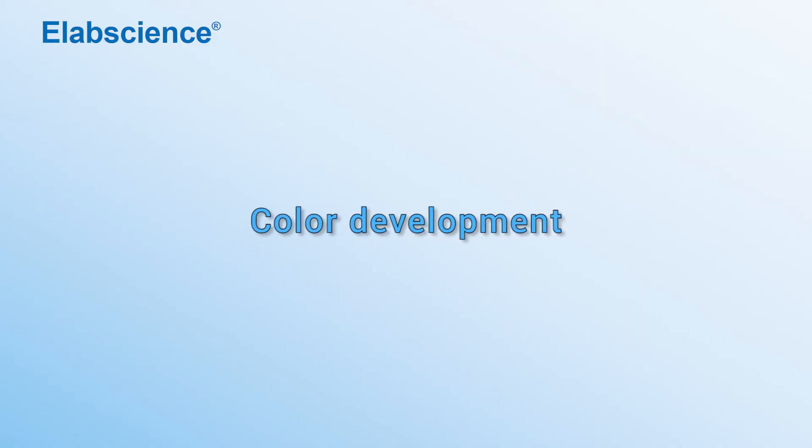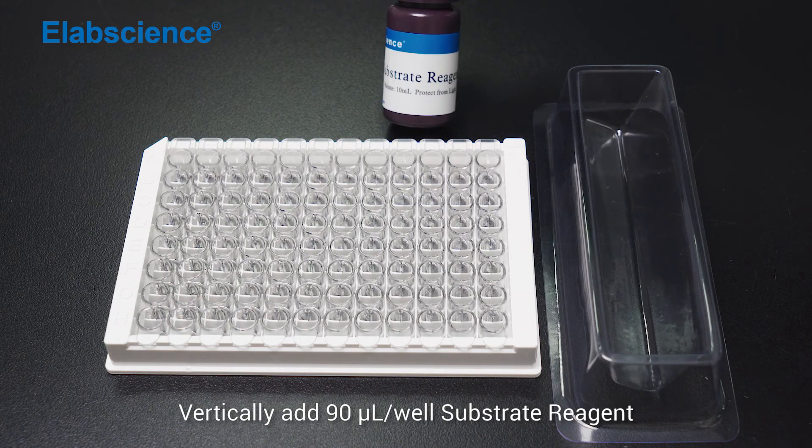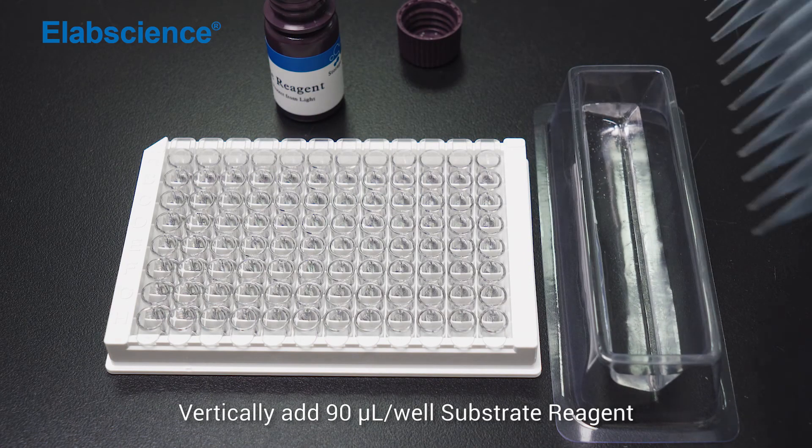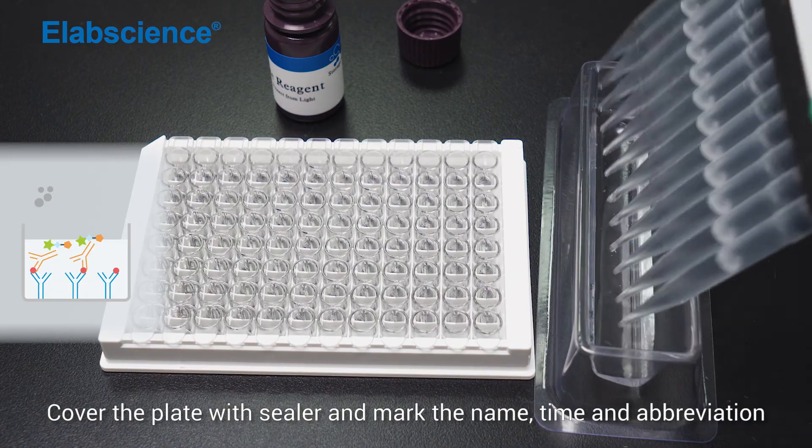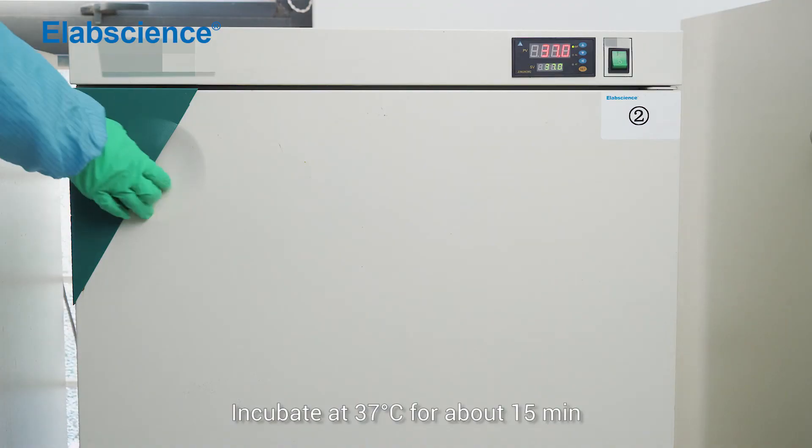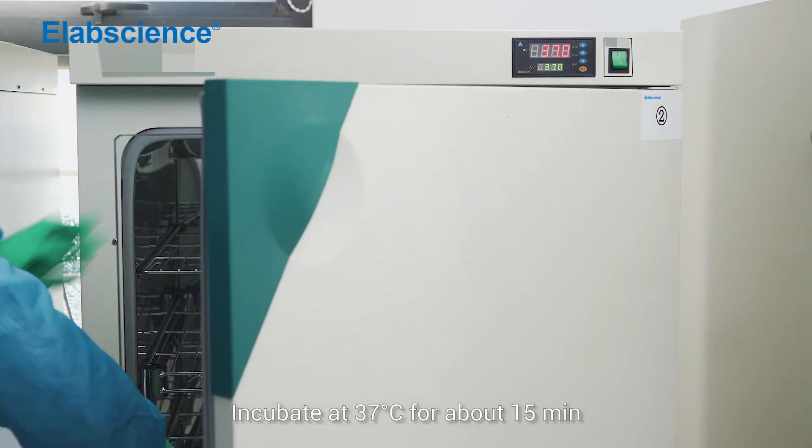Color development. Vertically add 90 µL per well substrate reagent. Cover the plate with sealer and mark the name, time and abbreviation. Incubate at 37 degrees for about 15 minutes.